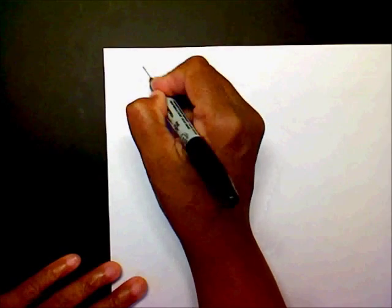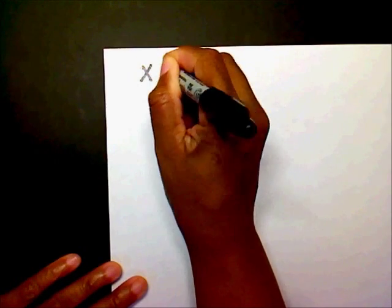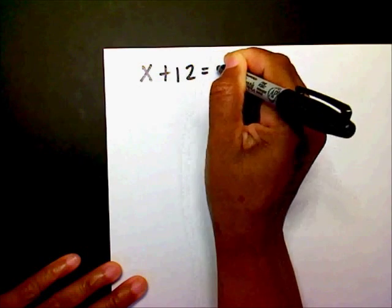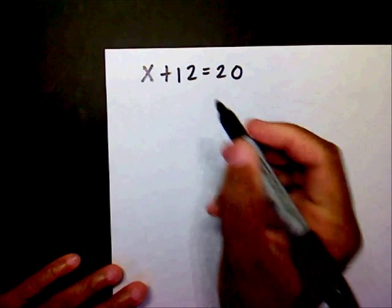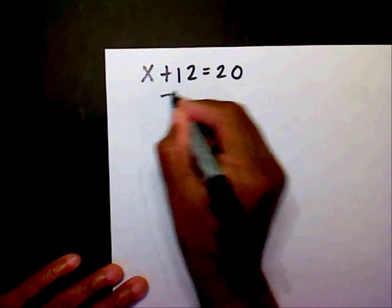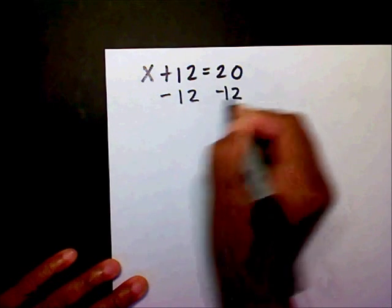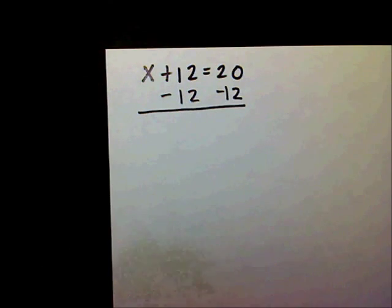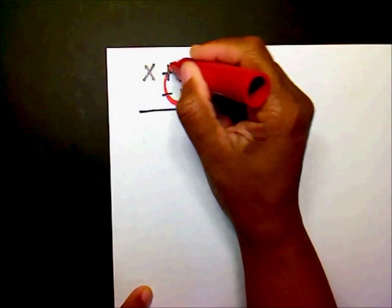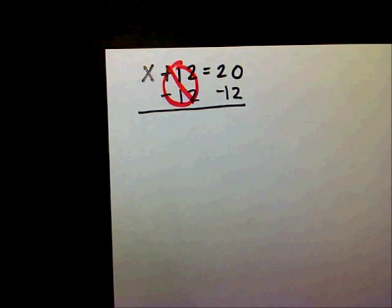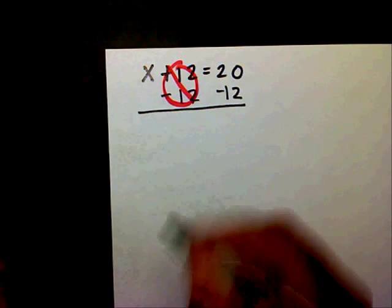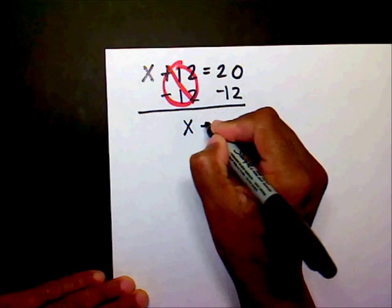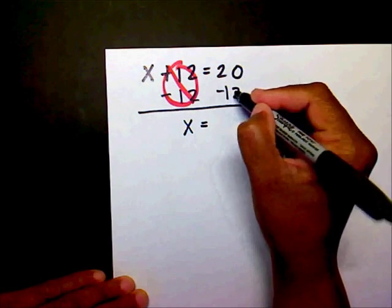Okay, the first problem you had was x plus 12 equals 20. You should have subtracted 12 on both sides. These 12s created zeros, so there's nothing left which leaves you with x equals 20 minus 12 is 8.